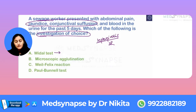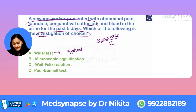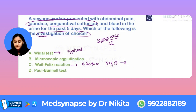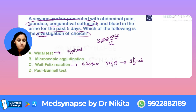Now suppose you don't know the direct test for leptospirosis, but at least you can rule out the options. Vidal test — everybody knows this is for typhoid. Weil-Felix reaction — we have read this in rickettsia. The specific one is OXK positive, which stands for scrub typhus. Scrub typhus is OXK positive.